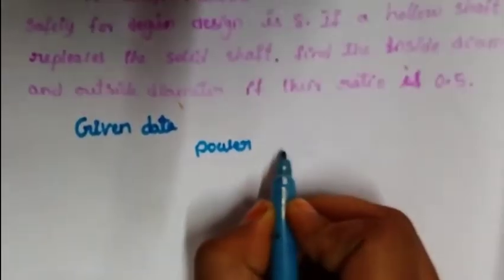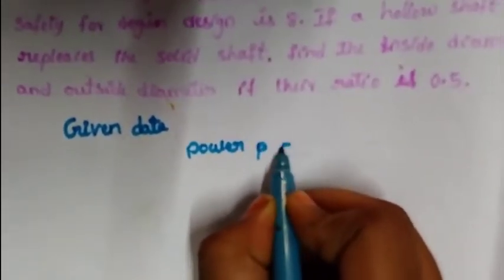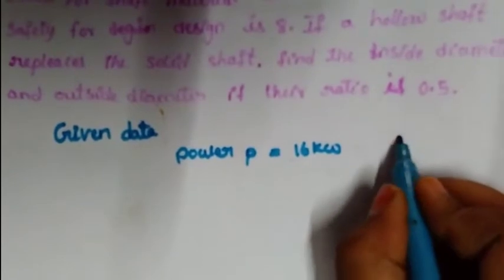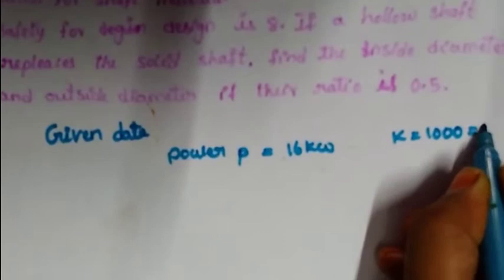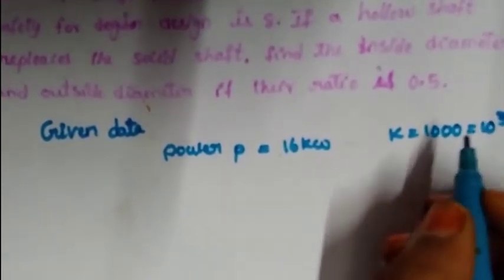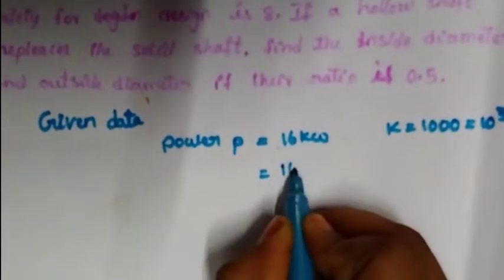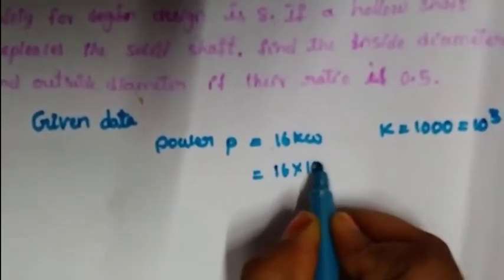Given data: power P is equal to 16 kilowatts. Kilo is equal to 1000, so we have to take this conversion: 16 into 10 power 3 watts.